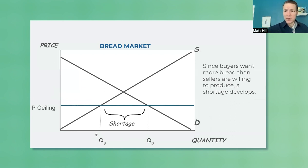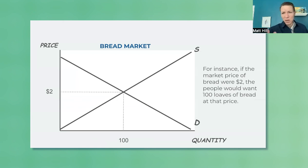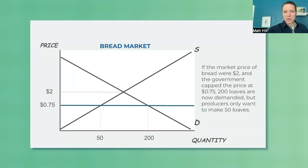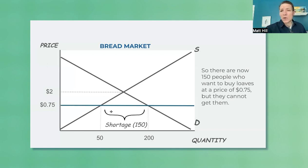So we have a shortage. This they should realize from our opening example — if we put this price cap on bread, there will be a shortage: more people want it than want to produce it. Let's put some numbers on it. Let's say bread is $2 and 100 are sold. We put a 75-cent price ceiling — now 200 people want to buy bread, but only 50 is produced. So we have 150 people that are out of luck. This is the first-order effect of a price ceiling: you will get a shortage.